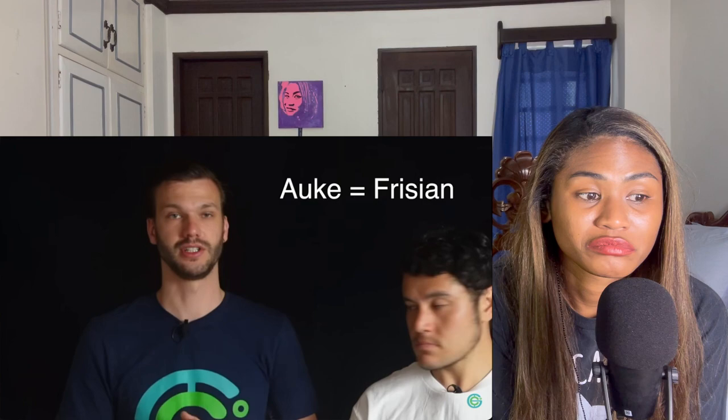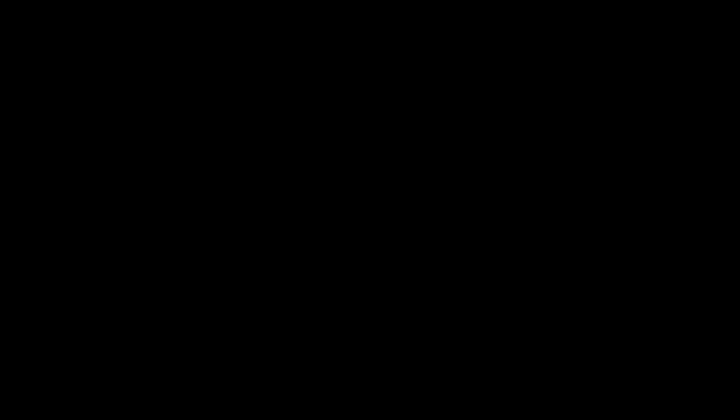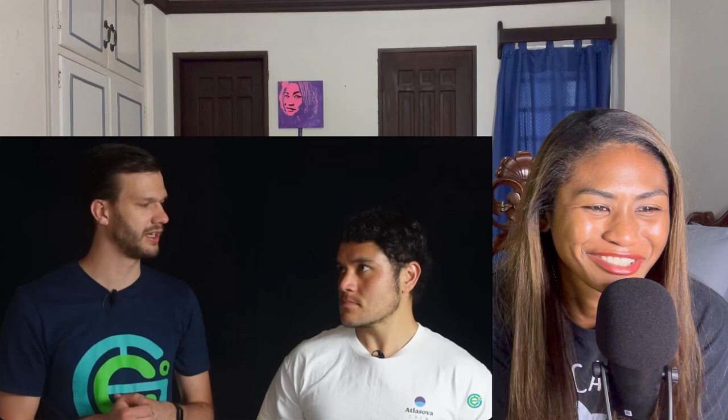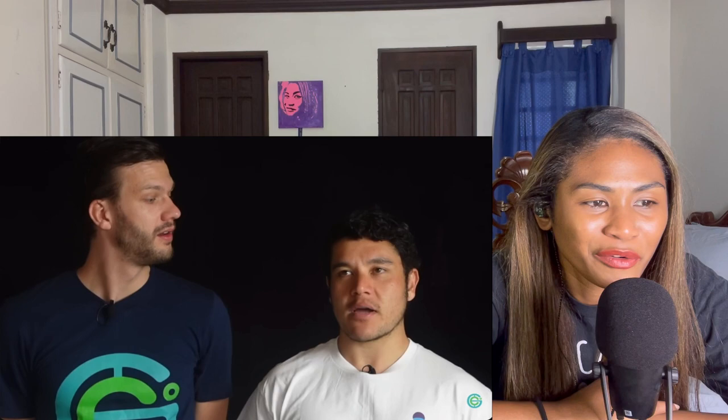Friesland, capital Leeuwarden — it's the place with its own language, Frisian. They're very proud of it, and it's actually the closest language to English. My name, Auke, is actually Frisian even though I'm not from there. About 40% of it — when they talk you probably wouldn't understand it, but there's actually a viral video of a guy speaking Old English to a Frisian guy trying to buy a cow, and the Frisian guy actually understood him.